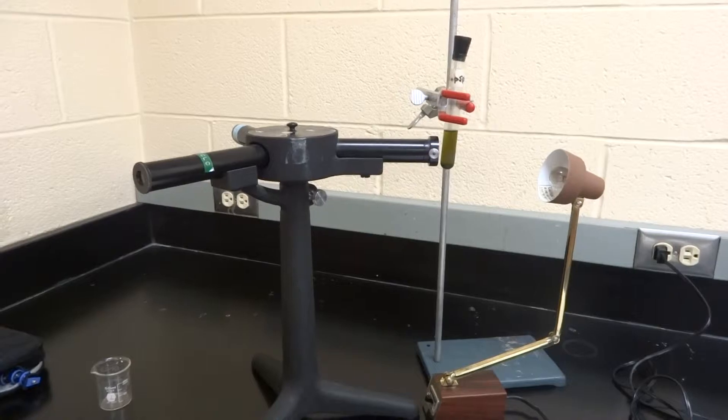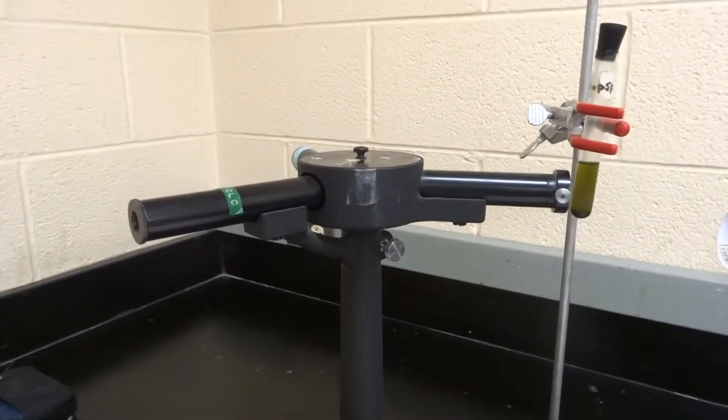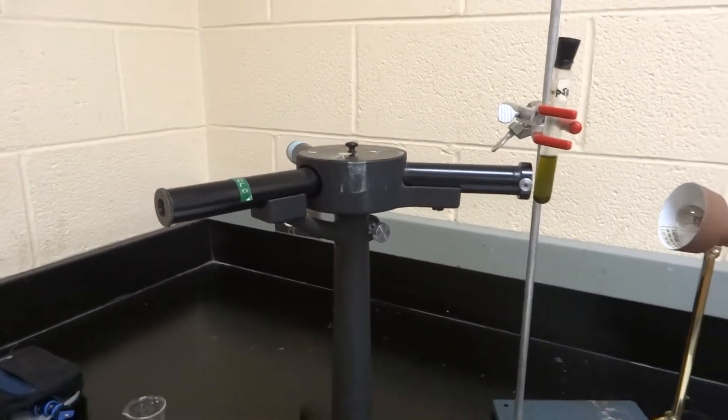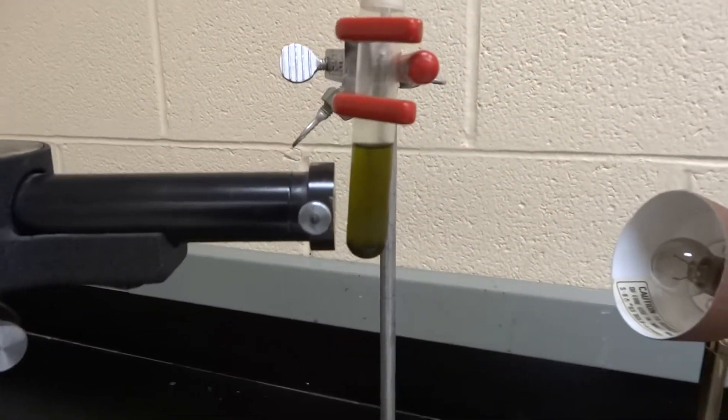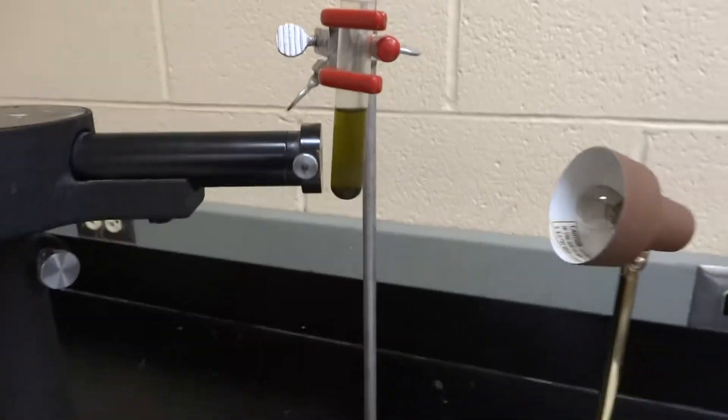Here we have the spectroscope itself which is this part here. What it has is a prism inside of it that's going to reflect light. I also have a spinach extract which is that green piece right there and a light.